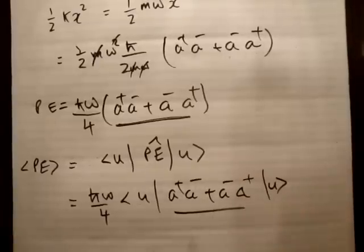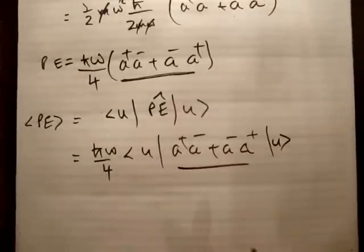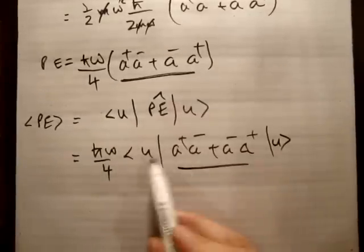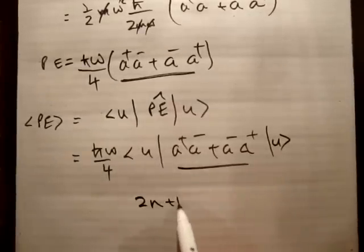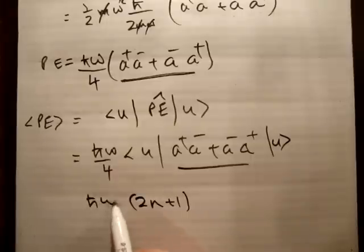Okay, and it's an integral I'm sick of doing, the answer is 2n plus 1. So we'll get, and yeah, you just get 2n plus 1, like that, outside of h bar omega over 4.